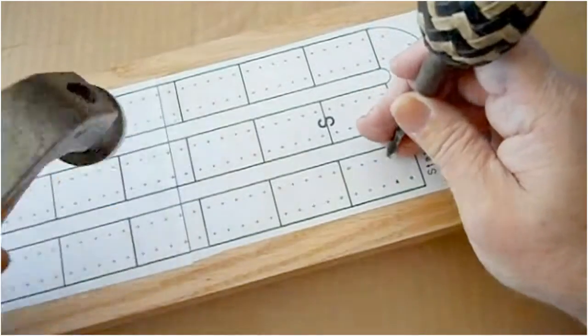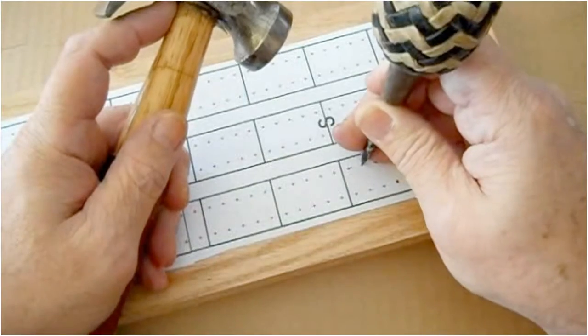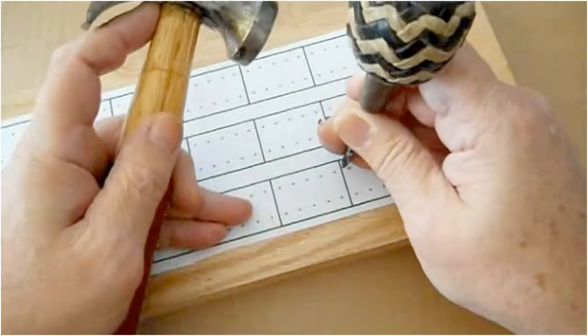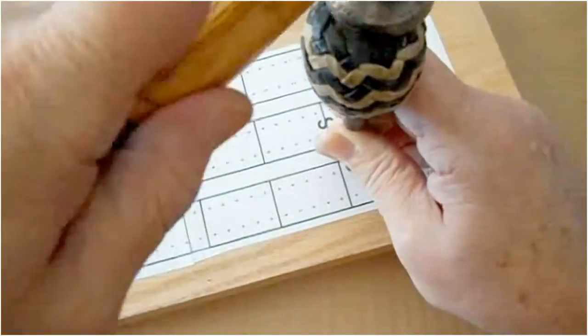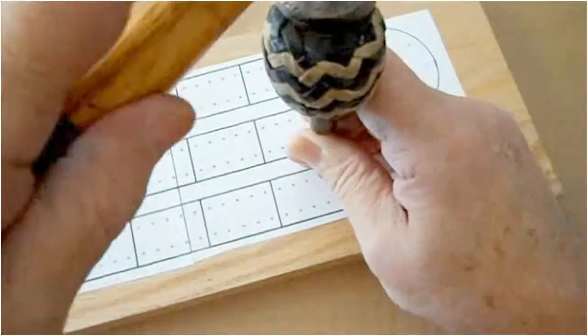Next, I'm going to use my father's old awl to transfer the hole locations from the pattern to the wood by aligning the point of the awl with the hole location marks on the pattern, and then striking the awl lightly with a hammer, thus leaving an indentation in the wood.